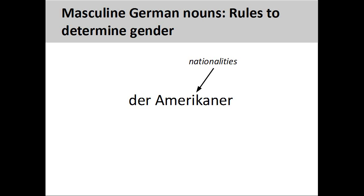Nationalities are masculine. For example, 'Amerikaner,' meaning American, is a masculine noun. We'll see a way to form a feminine version of these nouns later.